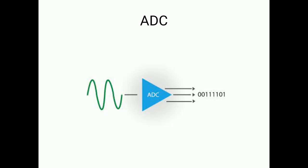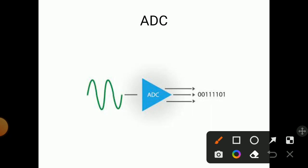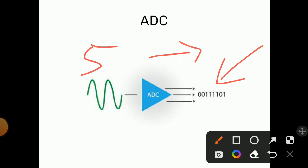Digital form means in the form of binary numbers. Suppose the input is 5 volts, then we should get output in the form of binary words — 0s and 1s. So like this, analog signal is converted into digital form by an analog to digital converter. This process we have to understand with the help of the experiment.